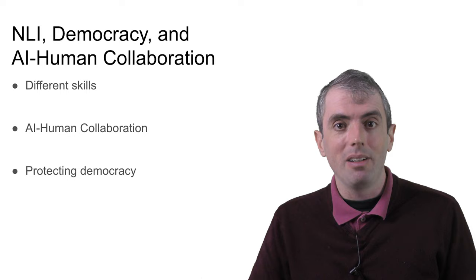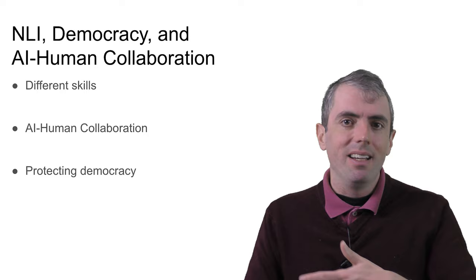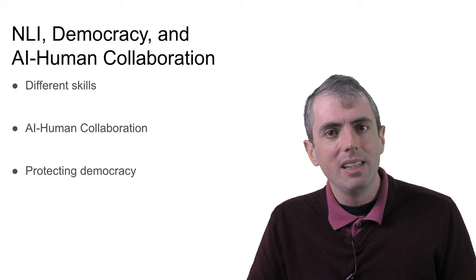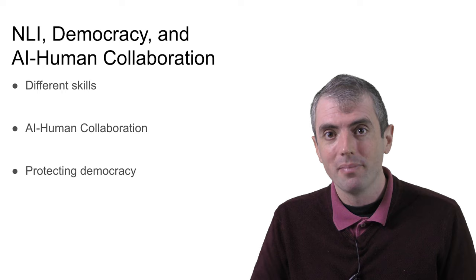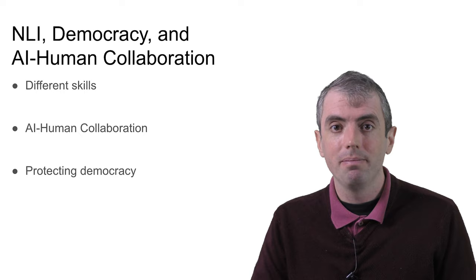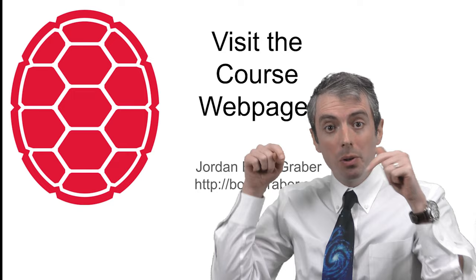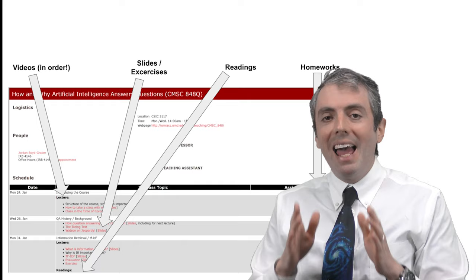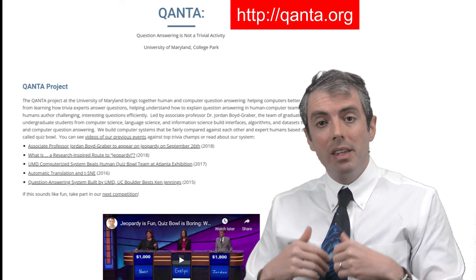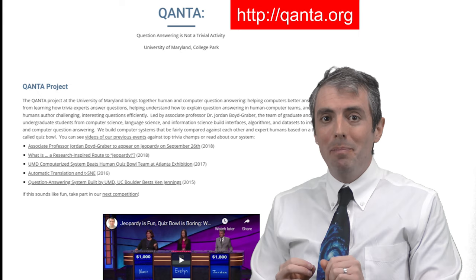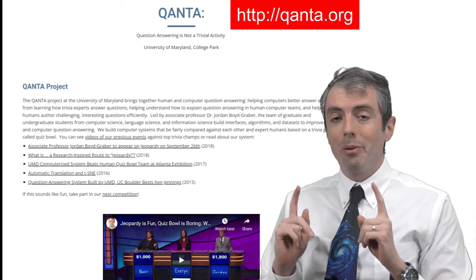While people blame social media and their recommendation algorithms for much of the incivility of the last few years, natural language processing and artificial intelligence more generally can help repair some of these harms. But it's up to us to make the necessary tools and to get people to actually use them. If you go to the course webpage linked below, you can see the lectures in the right order and get resources like homeworks or suggested readings. You can also visit quanta.org if you want to learn about our systems for creating computers that can answer questions, where quanta stands for 'question answering is not a trivial activity'.